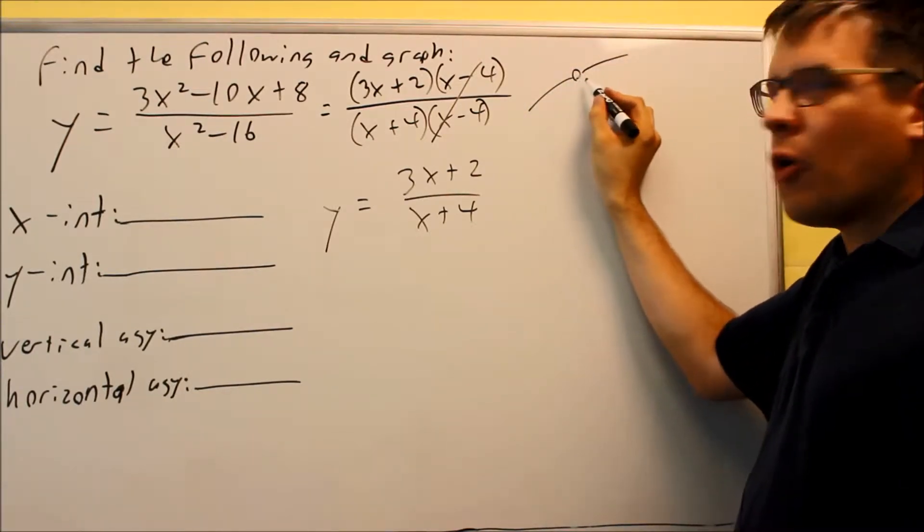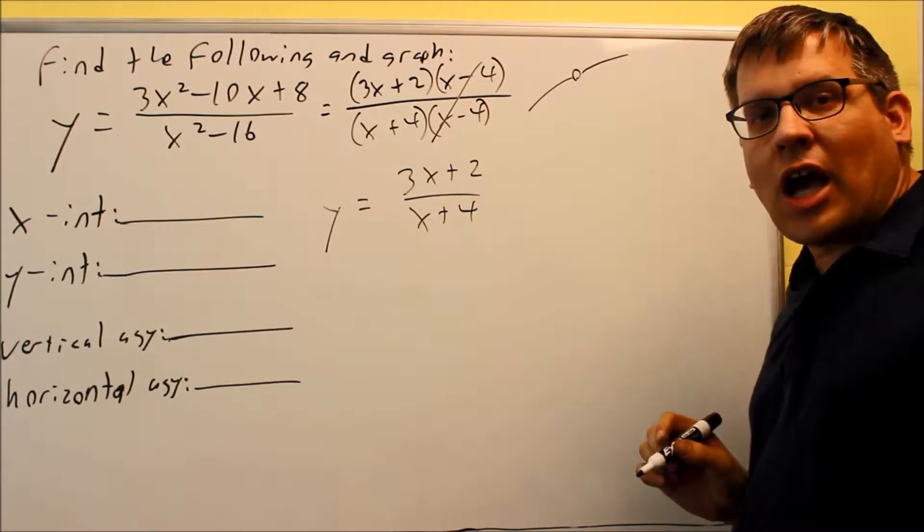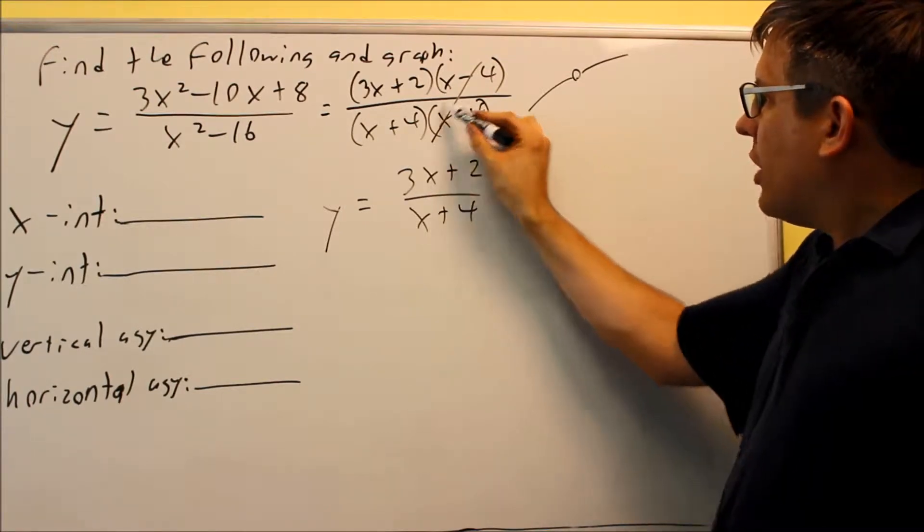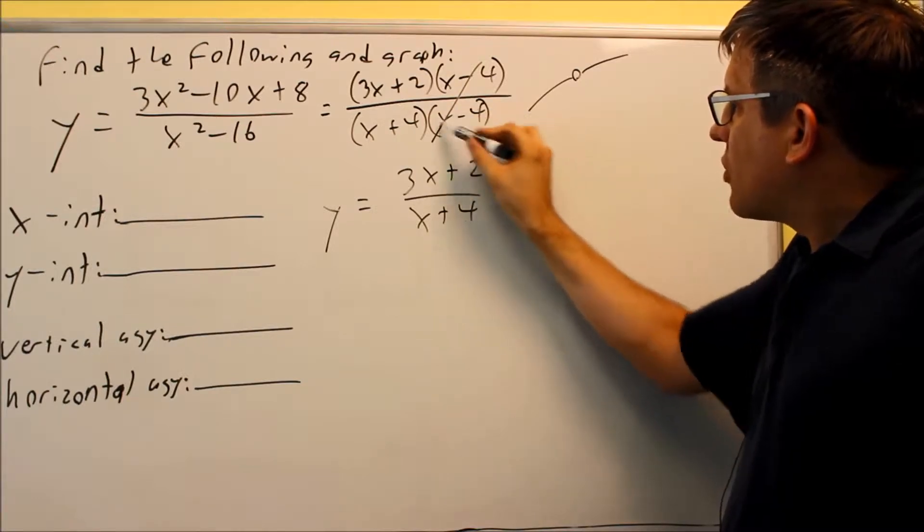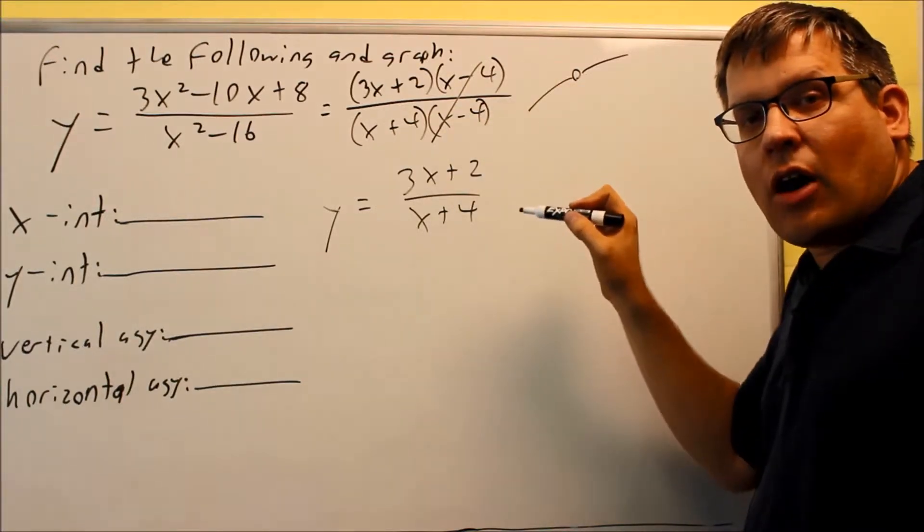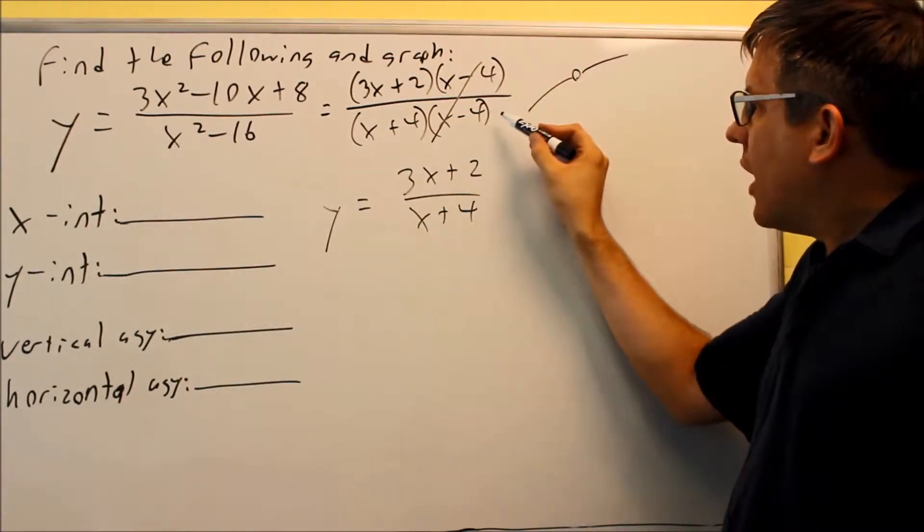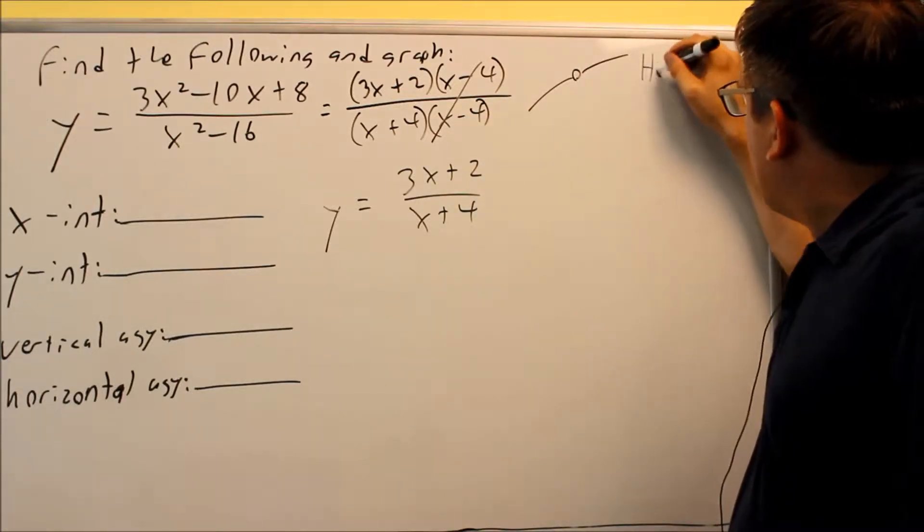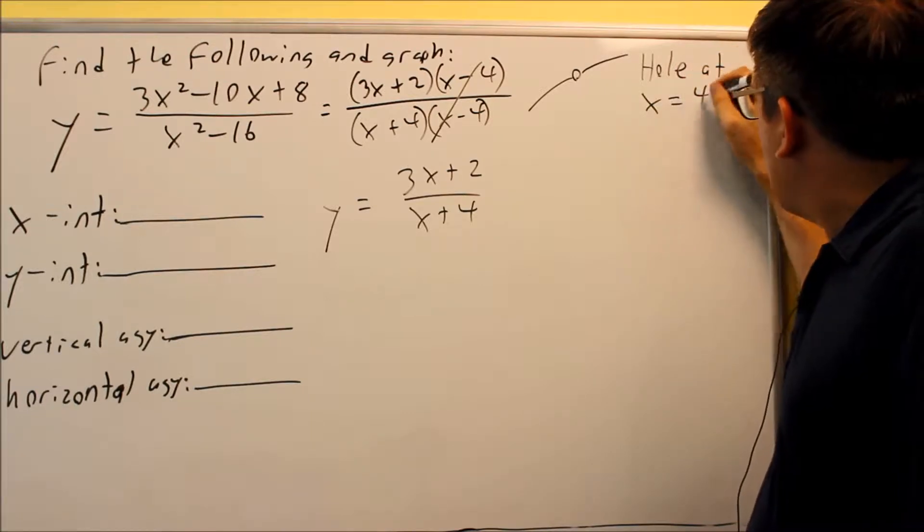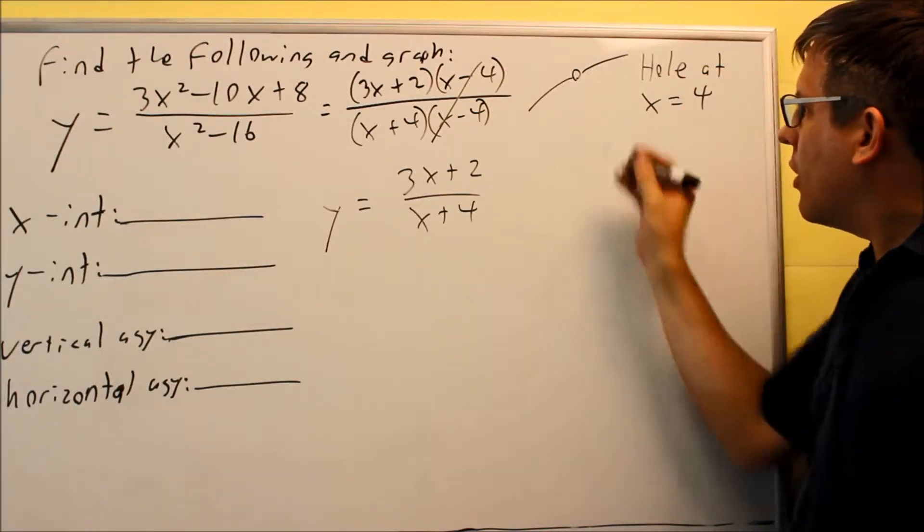The hole would be, basically it's going to occur at whatever x value makes this part zero, the part that you canceled out. So in this case when I did that, a 4 would make the bottom part zero, so I'm going to put up here that there's a hole at x equals 4. There's a hole that's missing there.